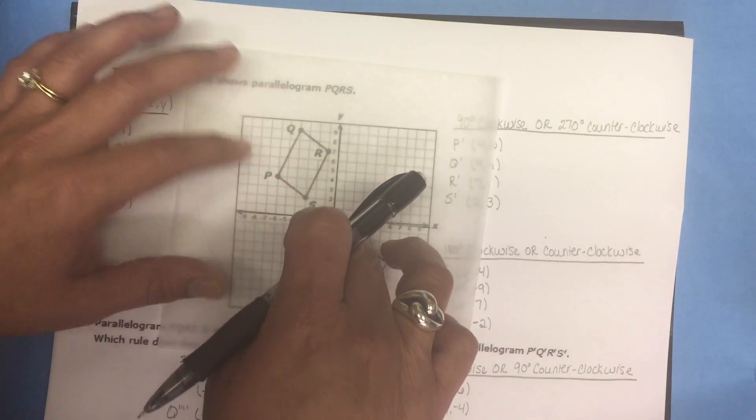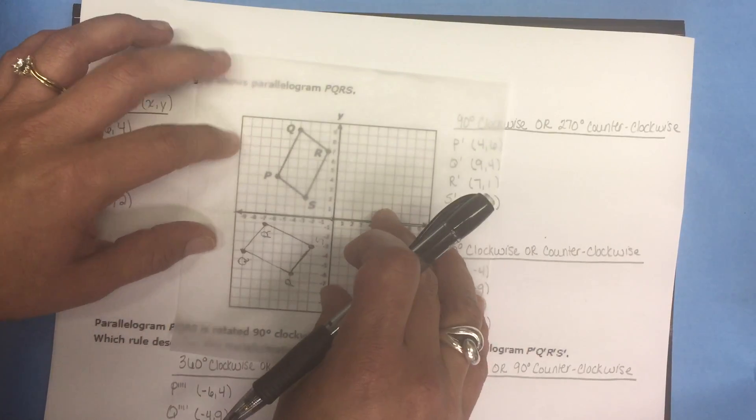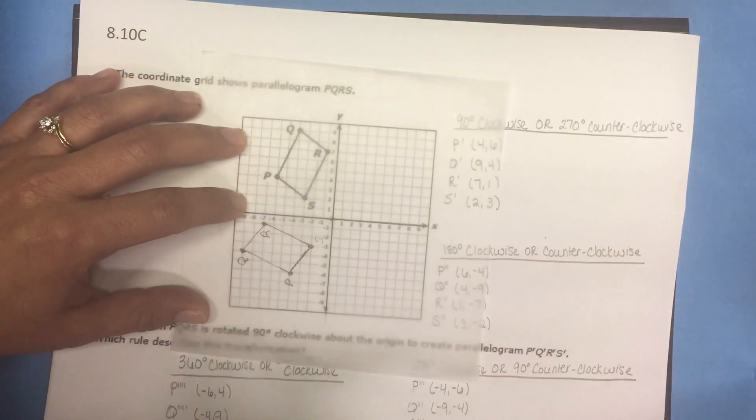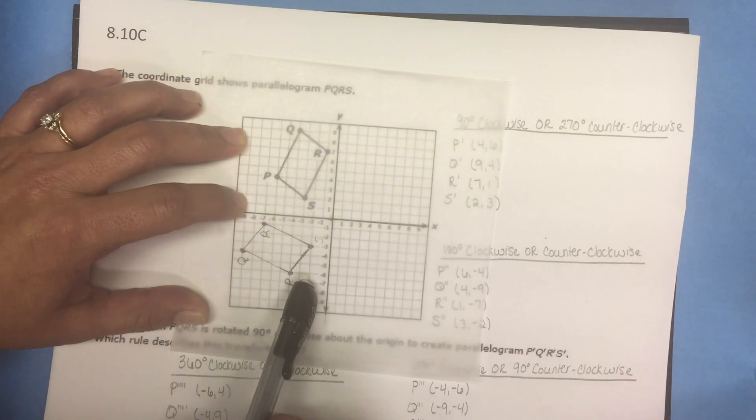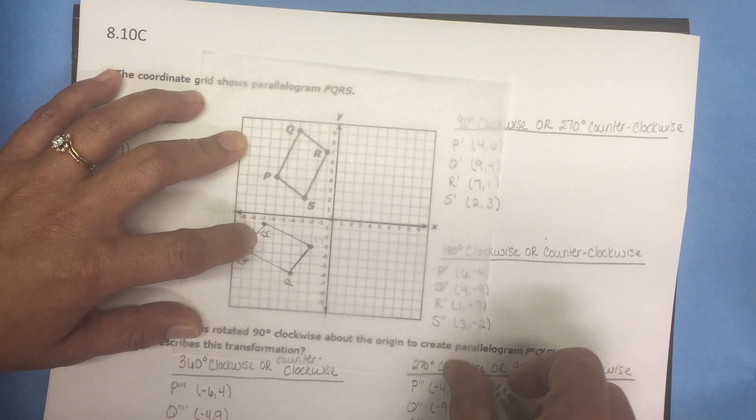Let's rotate it another 90 degrees for a total of a rotation of 270 degrees in the clockwise direction and let's see what the coordinates are for that rotated figure.